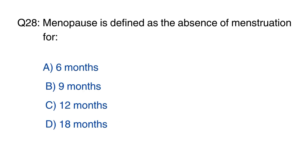Question 28: Menopause is defined as the absence of menstruation for? The right option is option C, 12 months.